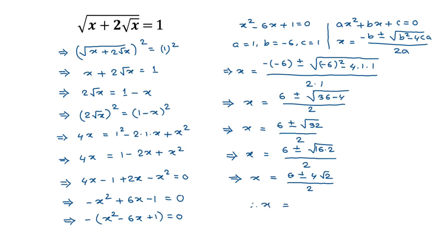So the value of x is equal to 6 divided by 2, which is 3, plus or minus 4 divided by 2 times square root of 2. This gives x equals 3 plus or minus 2 times square root of 2. This is the solution of our given equation. If you like this video please subscribe to my channel, thanks for watching.